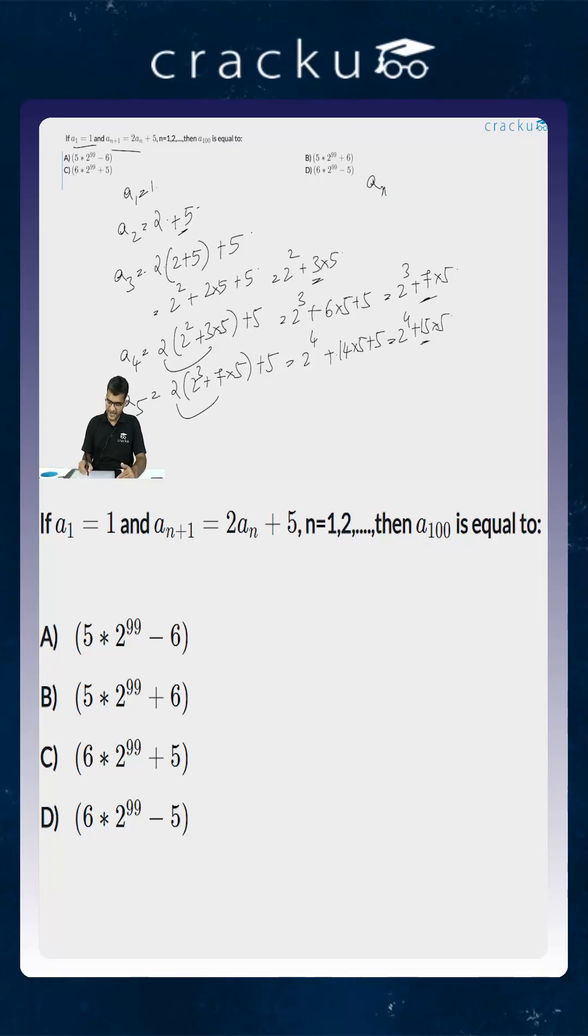So the value of A_n is equal to 2^{n-1} (because the first term in A₅ is 2⁴, the first term in A₄ is 2³, in A₃ it is 2², and so on) plus (2^{n-1} - 1)×5. This is basically the value of A_n.